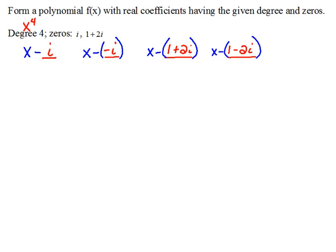So when I look at these as the factors themselves, this one is x minus i. This second one would be x plus i, because minus the negative, right, would be the positive. Here we'd have to distribute our negative to get x minus 1 minus 2i. And again, we'd have to distribute our negative to get x minus 1 plus 2i.